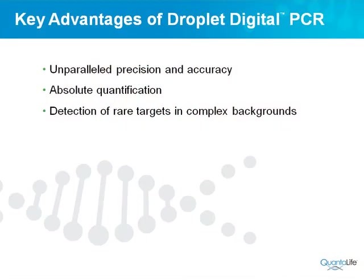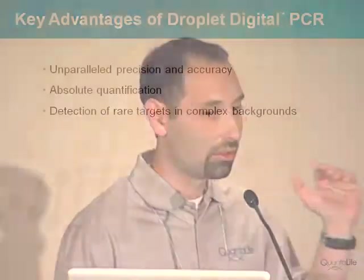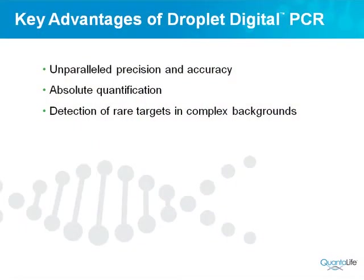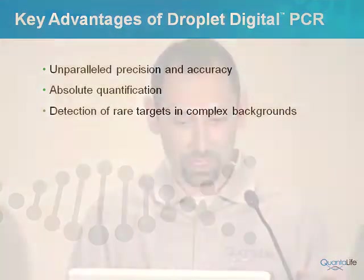There are many advantages to doing droplet digital PCR. Some of the key ones involve precision and accuracy — it fundamentally gives you much better precision and accuracy than anything else out there. It gives you absolute quantification, so you can do away with standard curves. You get a number out in the end that gives you the concentration — number of copies per unit volume. It also allows you to detect rare targets in complex backgrounds, and I'll go into a particular application of this and how it works in practice.